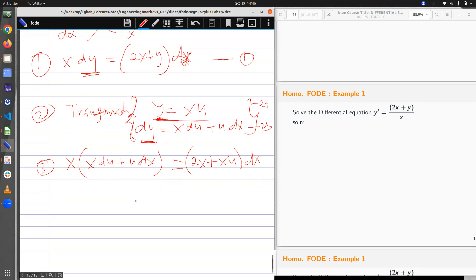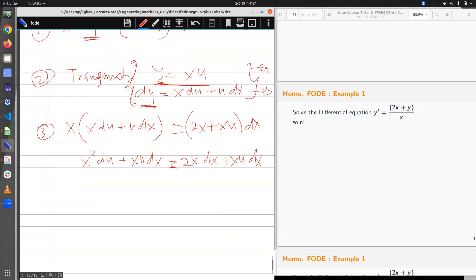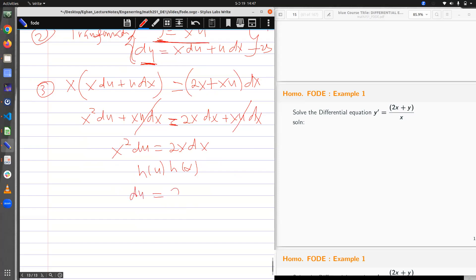Then I can expand. So here I expand and make it separable. I'm going to get x squared du plus x u dx is equal to 2x dx plus x u dx. Now I have to group like terms. If I group like terms, this cancels out that, it becomes zero. So I'm left with just having x squared du is equal to 2x dx. Is this separable? Not yet. Separable means I should have terms in u only and then x only. How do I get that? It would be interesting to divide both sides by x squared. It means I move the x to this part of the equation. So x squared cancels, leaving du equal to 2 over x dx.